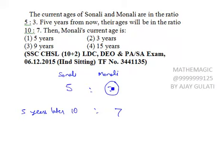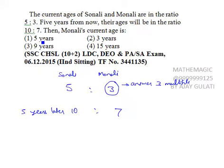Answer क्या होगा? Monali की age 3 का multiple होगी, तो जो option 3 की multiple नहीं है वो हट गई। Clear है।